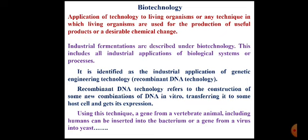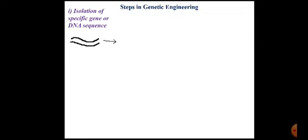For example, the gene from Bacillus thuringiensis, which is a pesticide organism, is inserted into a plant cell, and the plant grows into a resistant variety for insects. This is how genetic modification is possible with the help of recombinant DNA technology. Now we will see the steps in genetic engineering. The first step is to have a specific DNA sequence — this is the DNA sequence you want to transfer into another cell, called donor DNA or the gene of interest.